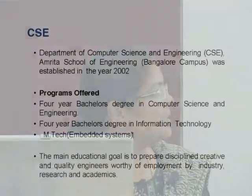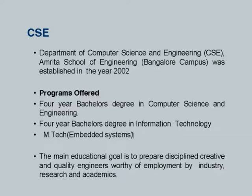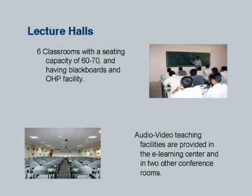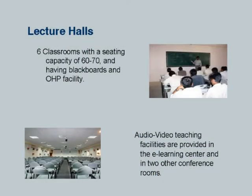This is a brief about the computer science department. It started in the year 2002 and we have grown quite a lot in six years. We have two bachelor's programs, one in computer science and one in information technology. We have started our first postgraduate program in embedded systems, and by next year we will have our second postgraduate program. Our classrooms have a seating capacity of 60-70 with OHP facility, and we have also started having LCD projectors in two to three classrooms, and very soon we will have LCD projectors in every classroom.